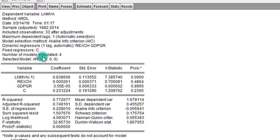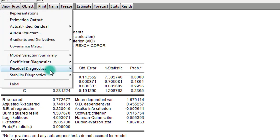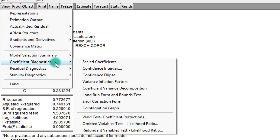So this is the output for the ARDL model. For me to now obtain the bounds test for cointegration results, I proceed to click on View from the output window, I maneuver to Coefficient Diagnostics, click on Long Run Form and Bounds Test.